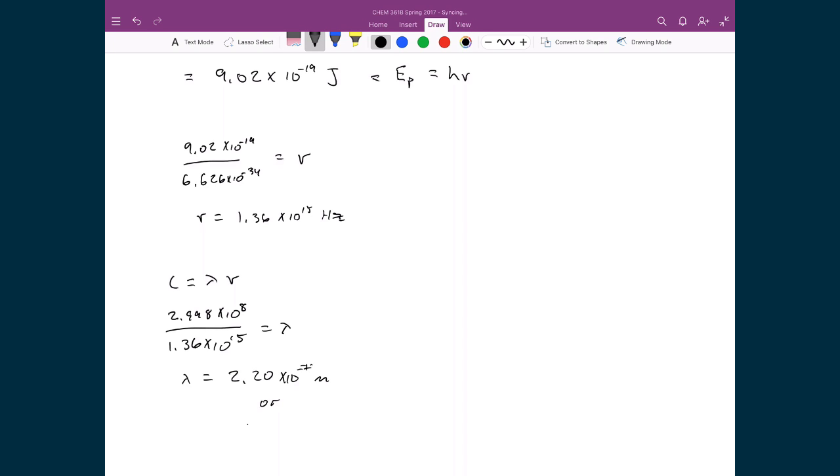Or, written in nanometers, that's 220 nanometers. So the color of that light is going to be very blue. In fact, it's probably a bit into the UV range.